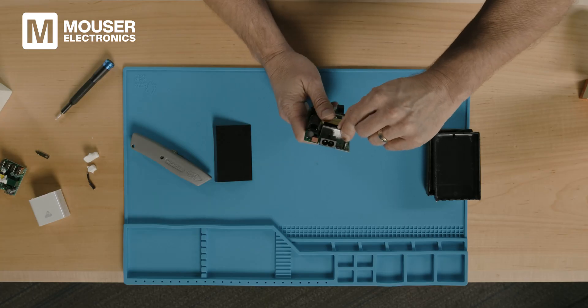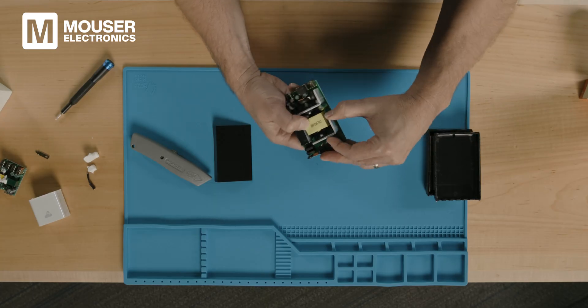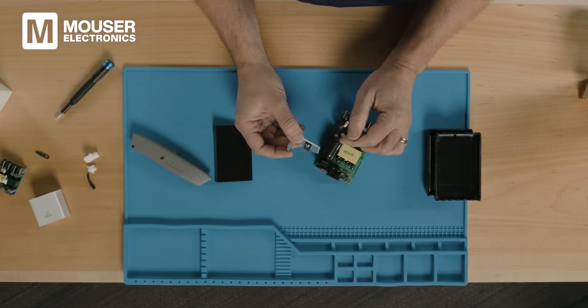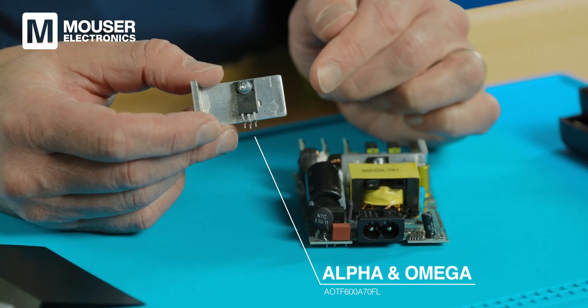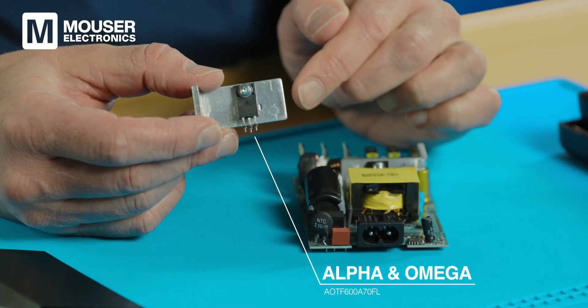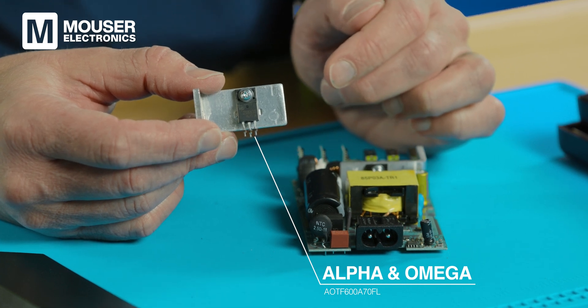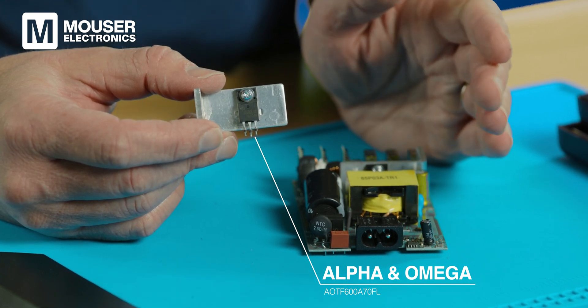So now I want to pry one of these big thermal heat sinks and the attached power MOSFET off. So I'm going to step aside and get one of those off now. This is an Alpha Omega Semiconductor AOTF 600A70FL. It's a 700 volt N channel silicon super junction power transistor and it has a 600 milliohm RDS on.